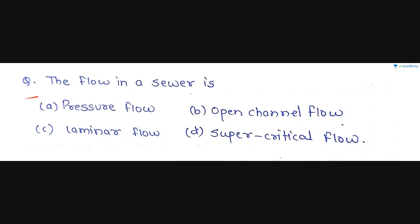The first question is: the flow in a sewer is — option A is pressure flow, option B is open channel flow, option C is laminar flow, and option D is supercritical flow. I have mentioned this in my first lesson of this course — after the overview lesson, the first lesson on introduction to sewer design explained this.